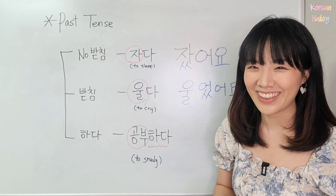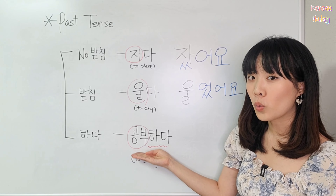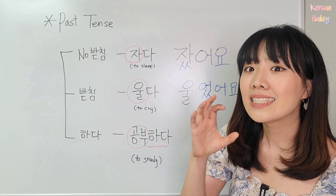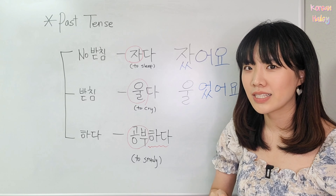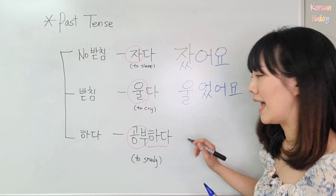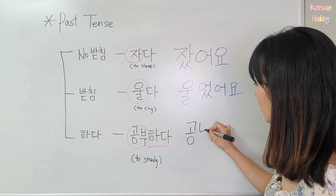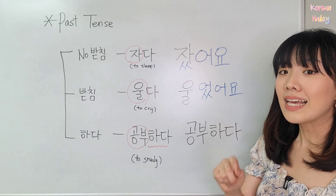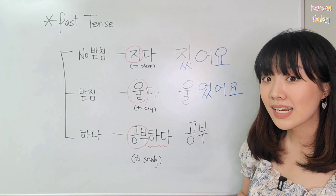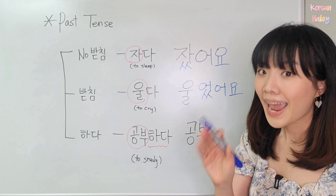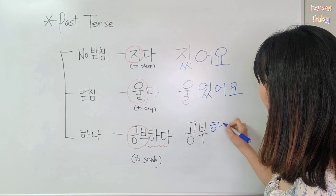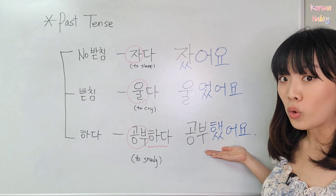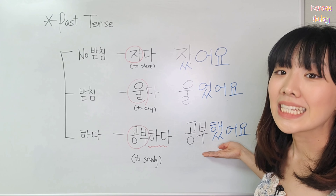Let's move on to the last verb: 공부하다, meaning to study. I want to say studied. Write 공부하다, then delete 하다. Put 했어요. It becomes 공부했어요, which means studied.